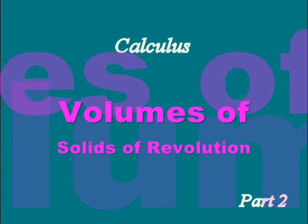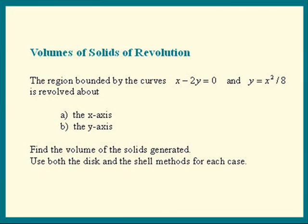Welcome to part two of Finding Volumes of Solids of Revolution. In part one we took a region bounded by two curves, we sketched it, we sliced it both vertically and horizontally producing a washer and then a shell.